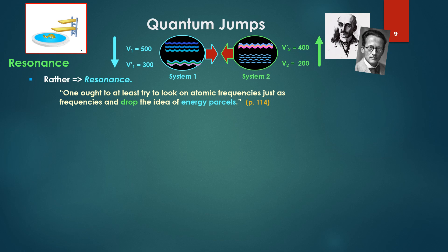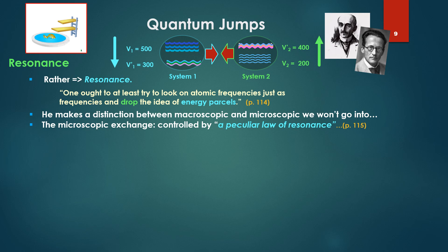Rather, Schrödinger says, it's resonance. To quote, why not at least try to look on atomic frequencies just as frequencies and drop the idea of energy parcels. He makes a distinction between macroscopic and microscopic exchange. It's controlled by a peculiar law of resonance.